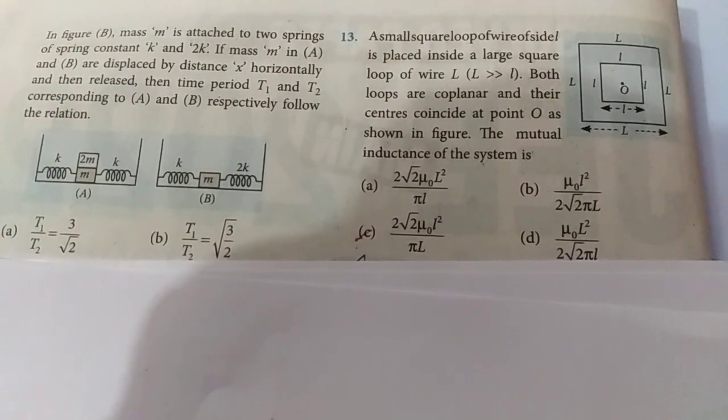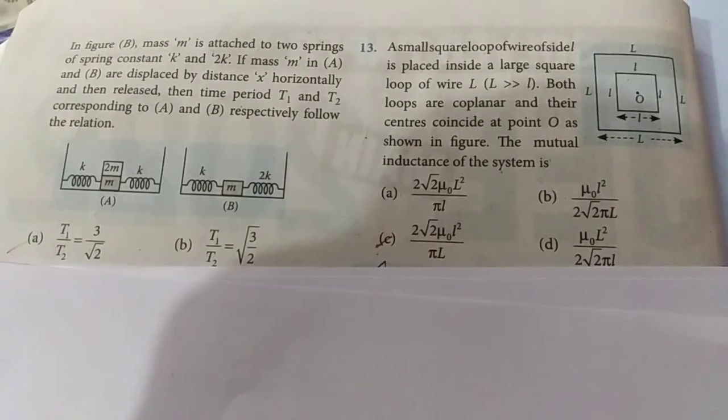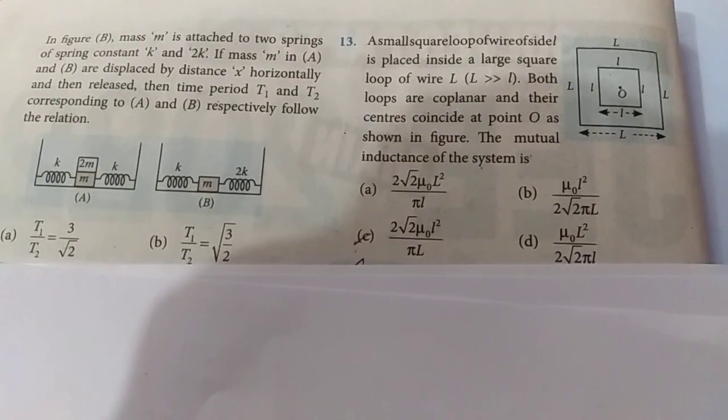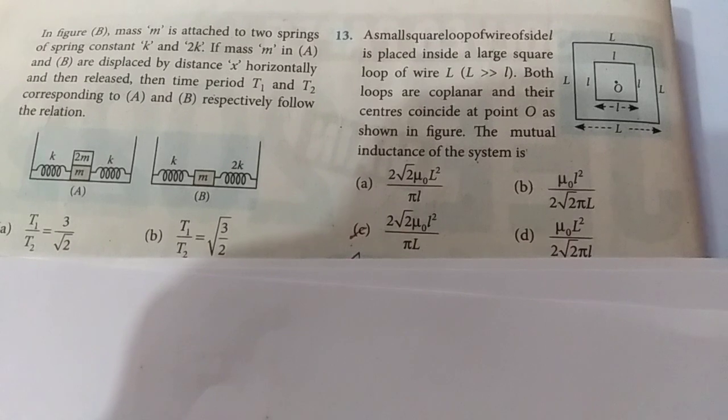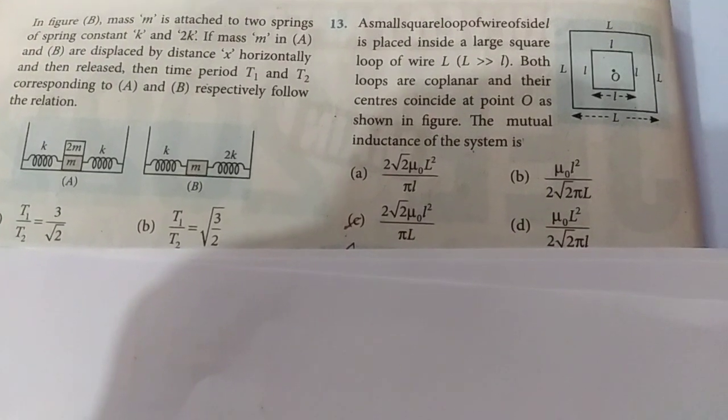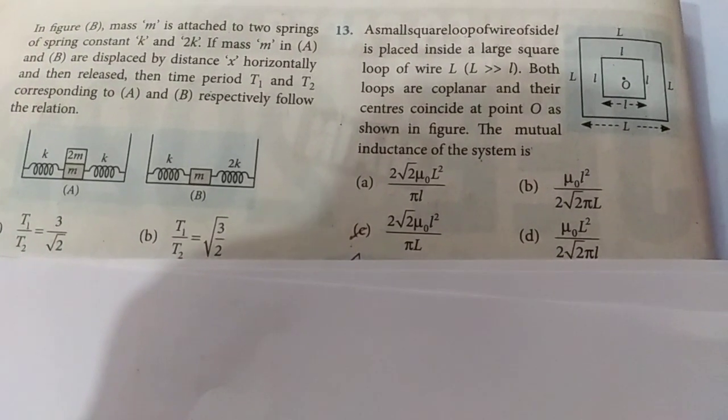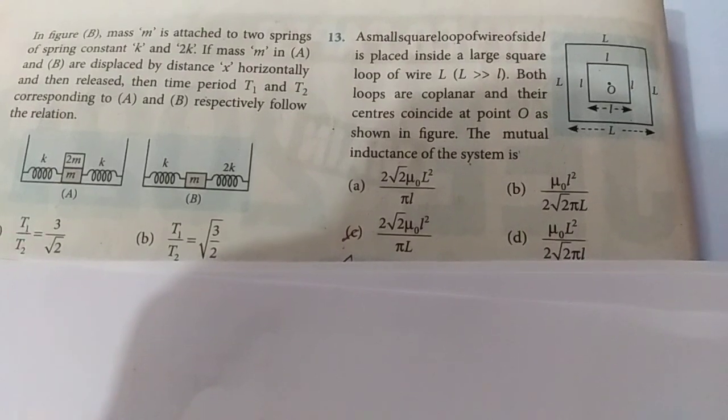So we have two loops here, square loops, coplanar, one side is capital L, one side is small l. Small l is very small compared to capital L. This is basically a problem from NCERT which has circular loops, but these loops are square.